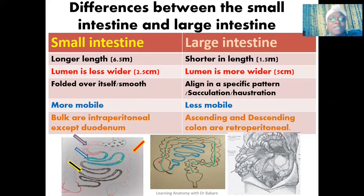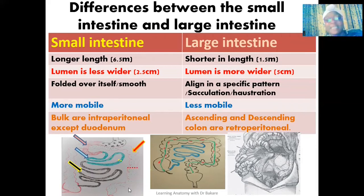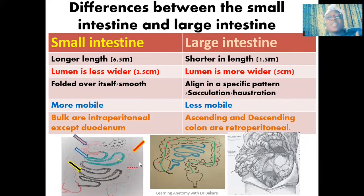So the lumen of the small intestine is about 2.5 cm, and the lumen of the large intestine highlighted in red is about 5 cm. This is where the name 'large intestine' comes from — the name is not given based on length.